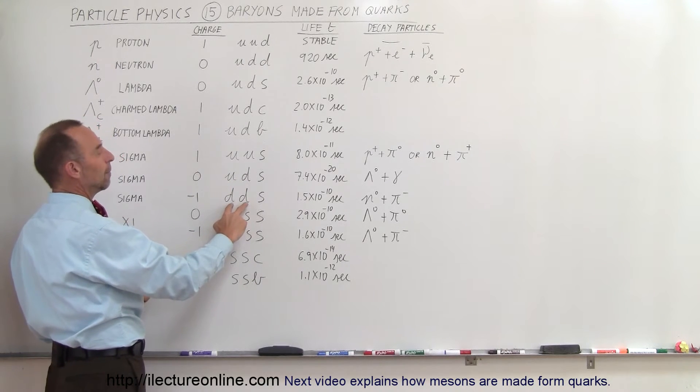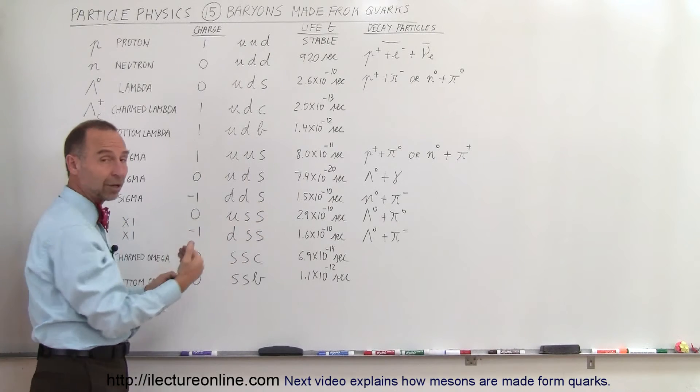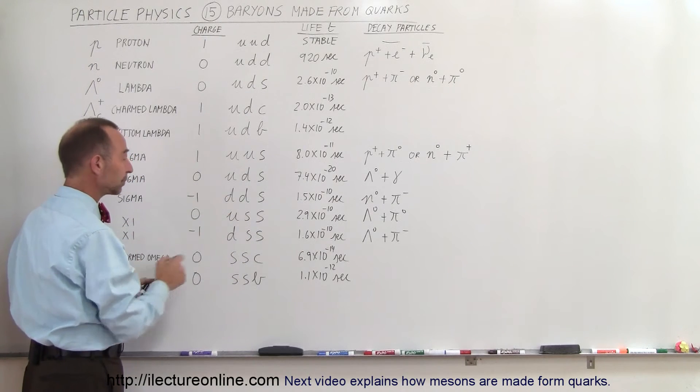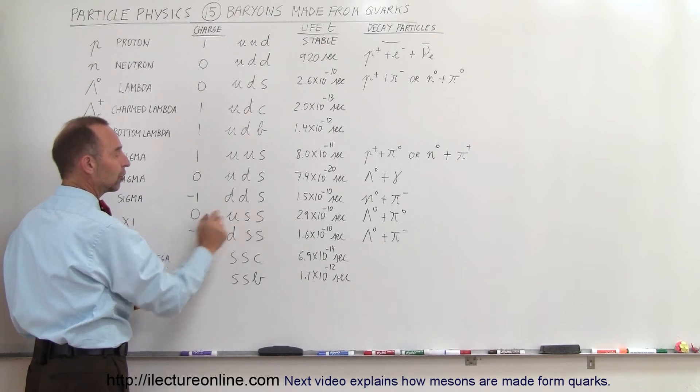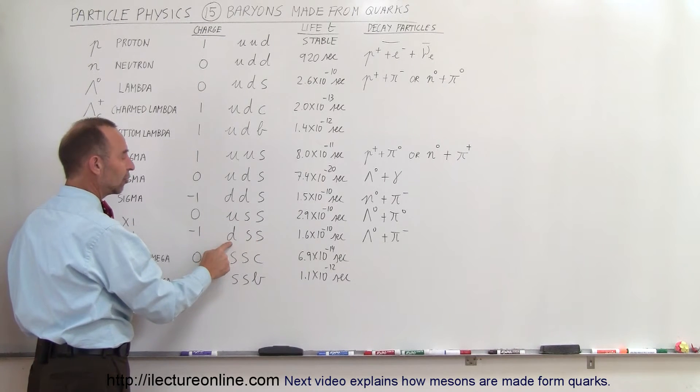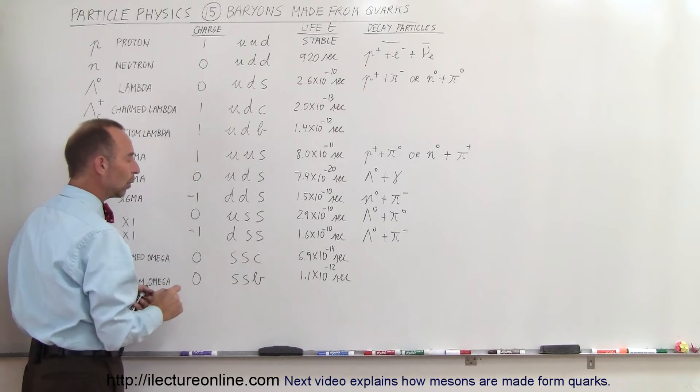Two downs are minus one-third, and a strange is minus one-third, so the three combined form a minus one. The up is a plus two-thirds, each of the strange is minus one-third, so they cancel each other out. The down is minus a third, so are the two strange, so that's minus one.